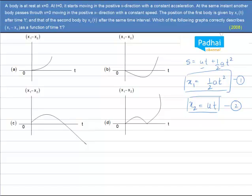The position of the first body is given by x1 after time t, and that of the second body is given by x2 after the same time interval. Which of the following graphs correctly describes x1 minus x2 as a function of t? So I have to calculate x1 minus x2. x1 minus x2 will be equal to minus ut plus half a t square. We have to draw the graph for this equation.